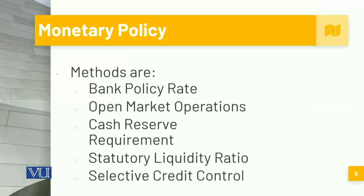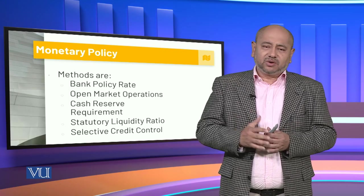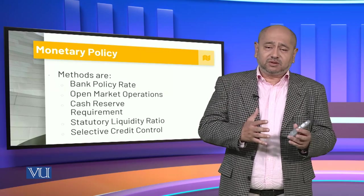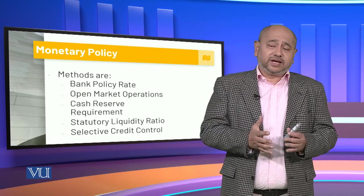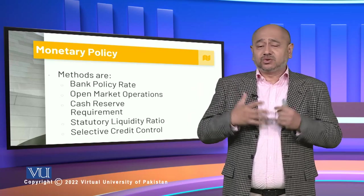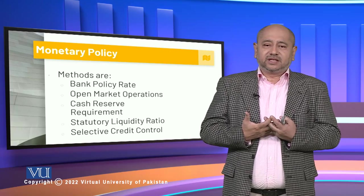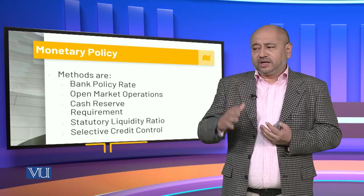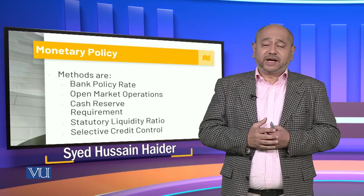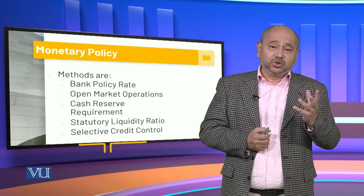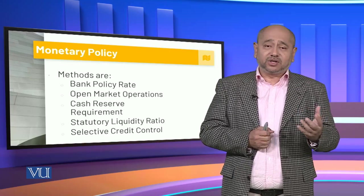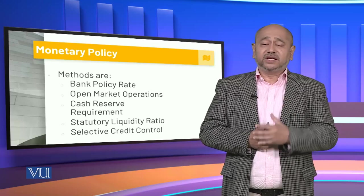There are different methods related to the bank policy rate and how open market operations are controlled. We talk about enhancing cash reserve requirements, which make sure that no banks tend to default. There is a statutory liquidity ratio which has to be maintained by the different banks, and then there is selective credit control — determining to whom, when, and where banks are basically lending. Through these different elements, mechanisms, and tools, the monetary policy contributes towards the economic policy and ensures monetary stability within the country.